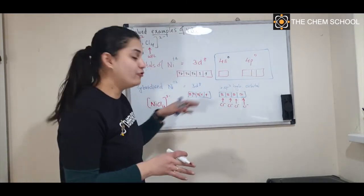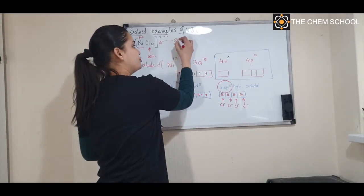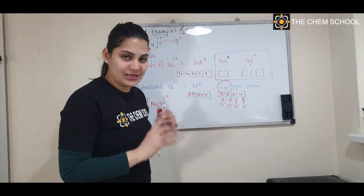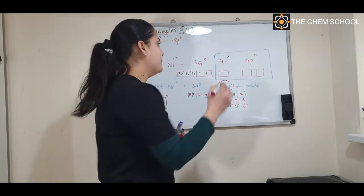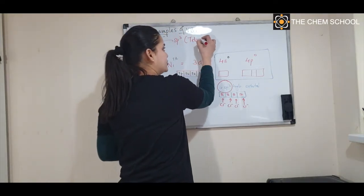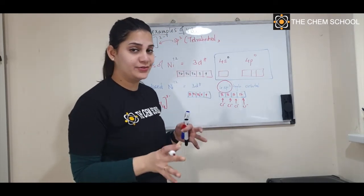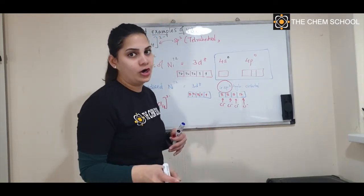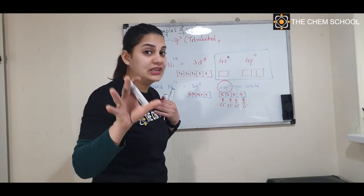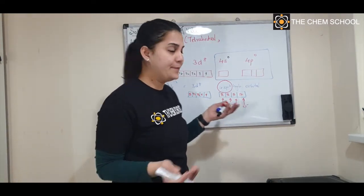The hybridization of this complex is sp³. If the hybridization is sp³, the geometry of the complex is tetrahedral. Regarding whether it is an inner orbital or outer orbital complex — that applies when you use a d orbital. In this case we haven't used any d orbital, so we will not discuss that here.